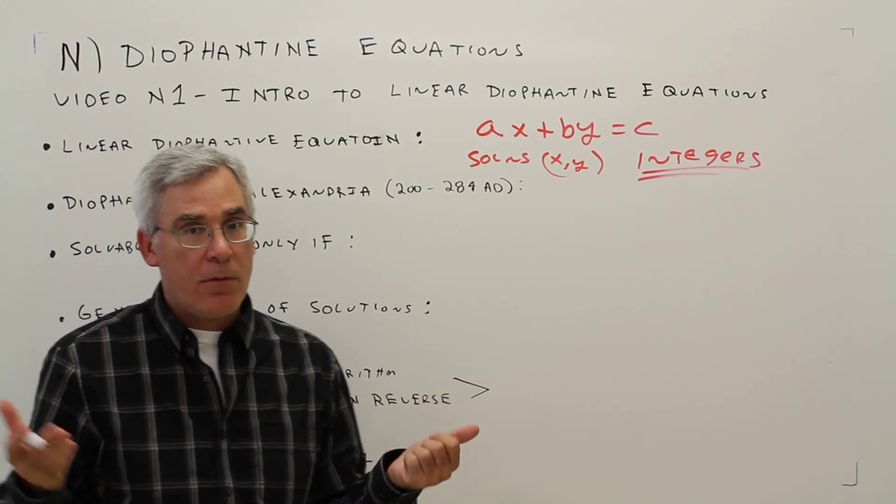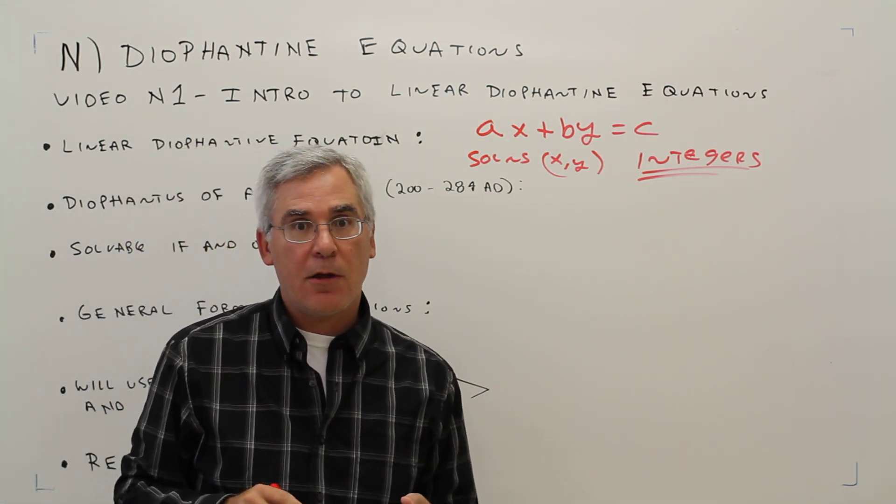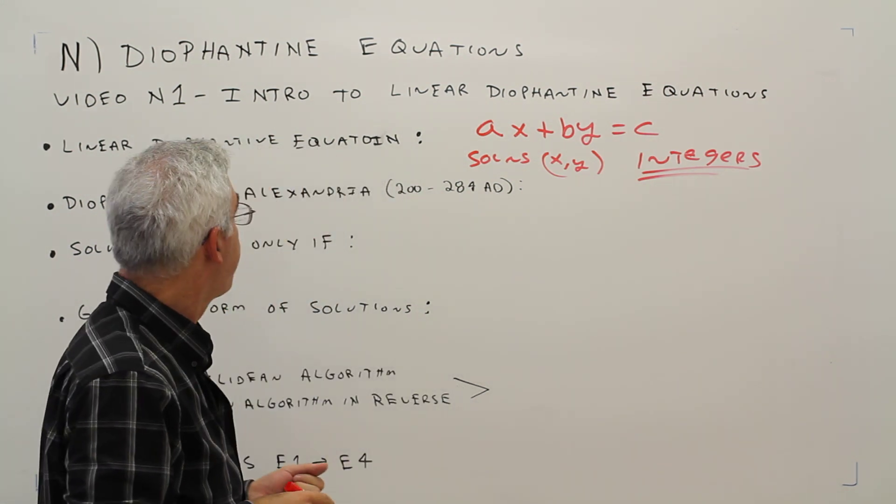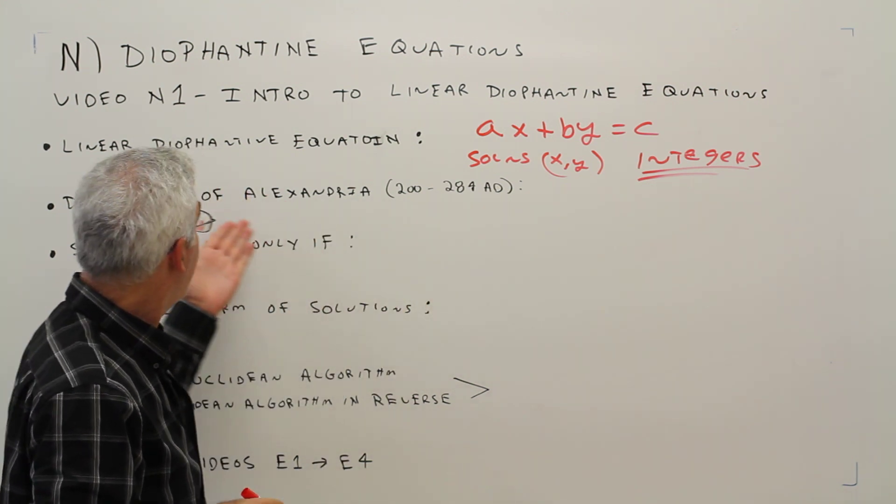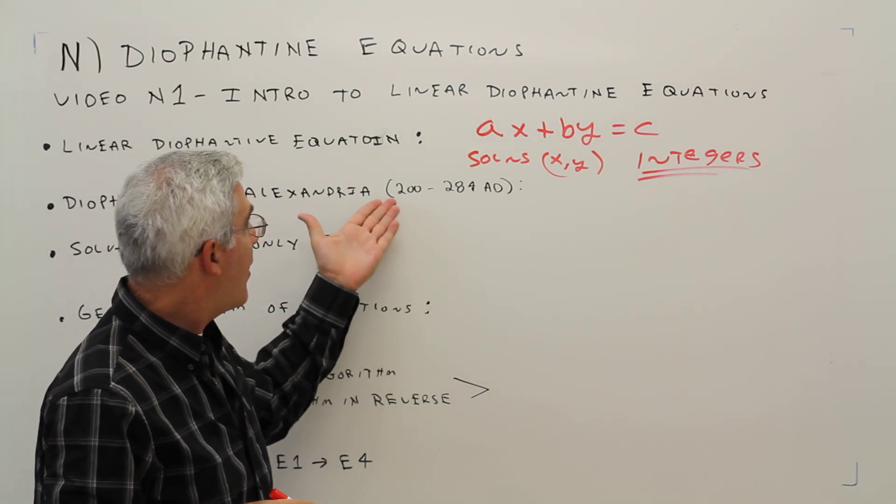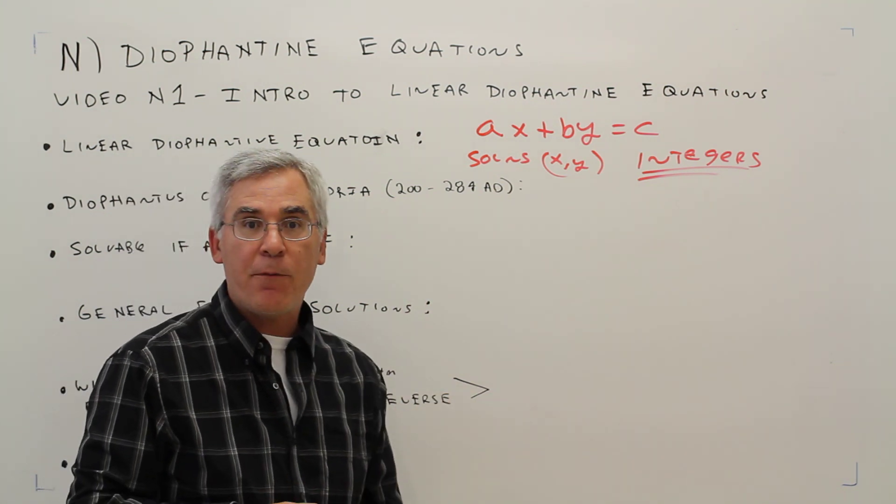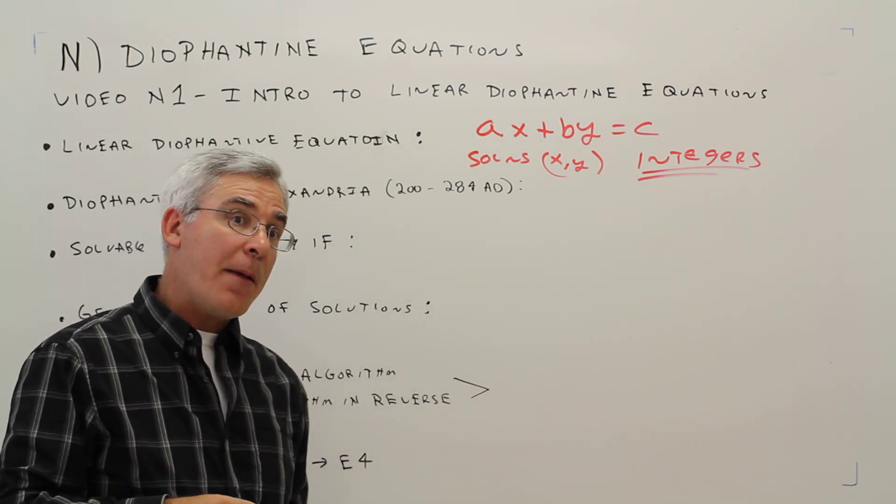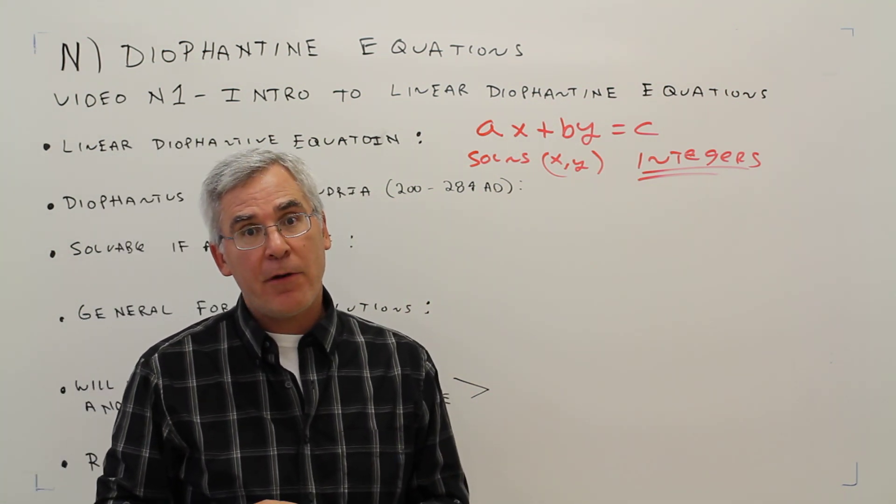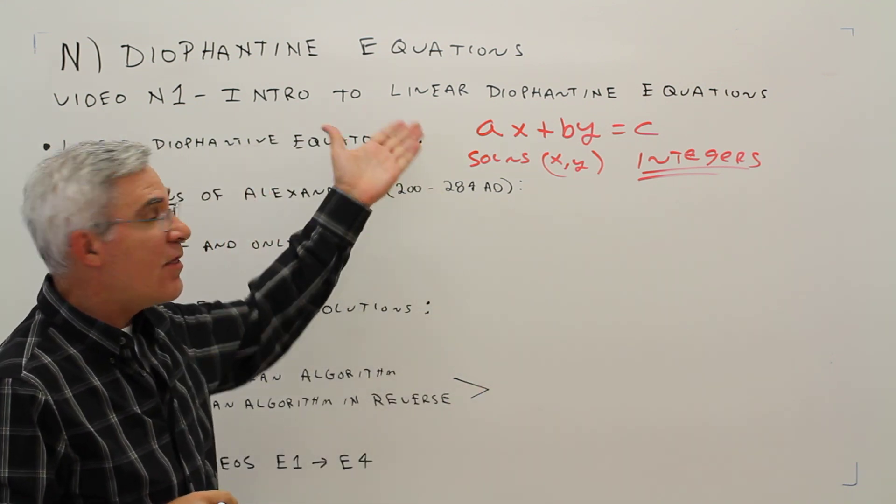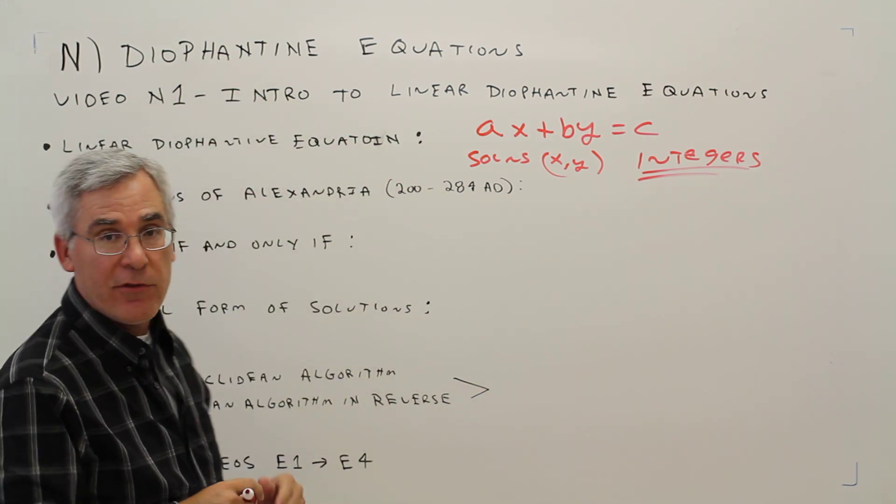Hence, that's what makes it in the number theory subset. Diophantus of Alexandria, he lived from 200 to 284 AD. Sometimes he's referred to as the father of algebra, and he studied these types of equations, hence the name.